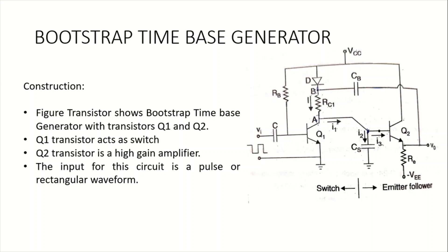This circuit actually works as follows. This is the construction of bootstrap time-based generator circuit, in which it consists of two transistors Q1 and Q2. Among these, the Q1 transistor works as a switch and Q2 transistor works as a high gain amplifier. The input for this circuit is maybe a pulse waveform or a rectangular waveform. This is how this circuit gets constructed.